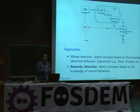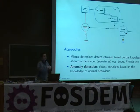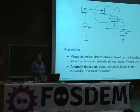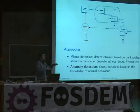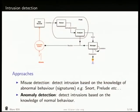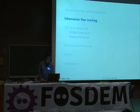With intrusion detection, we monitor the system, reading one or several data sources, analyzing that data, and trying to detect when an intrusion occurs. There are actually two ways of doing that: either you model what an intrusion is — so you know what patterns indicate an intrusion beforehand — or you try to model the normal behavior of the system, so that if it starts behaving weirdly, there's probably something wrong. We're going to use the second approach, using information flow tracking.